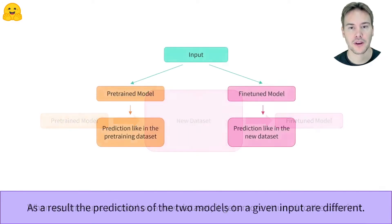When the two models are trained with the same task, we can then compare our predictions on the same input. The predictions of the two models will be different in a way that reflects the differences between the two datasets, a phenomenon we call domain adaptation.